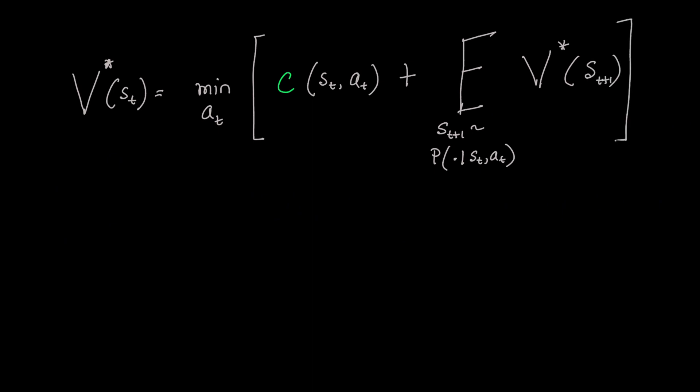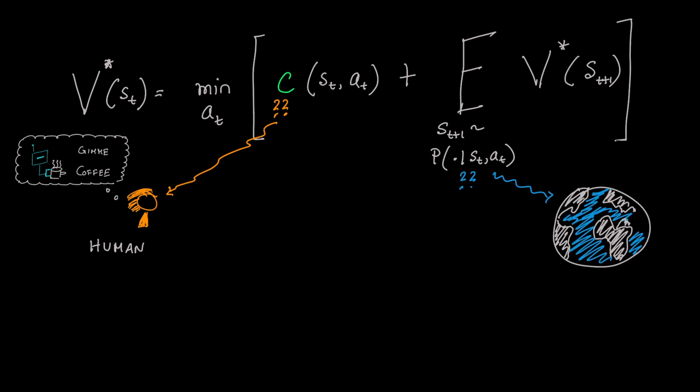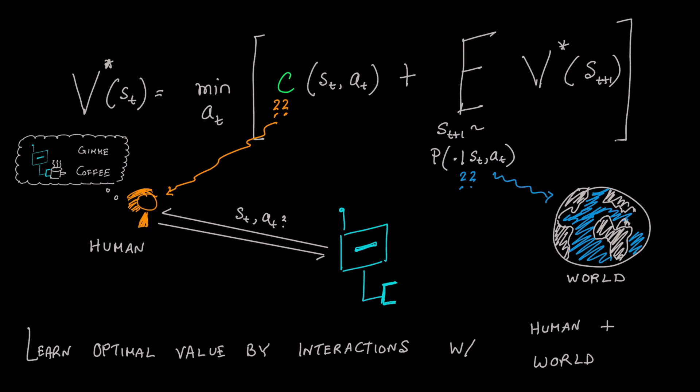The interesting bit is that the robot doesn't know all the pieces in this equation. For instance, how costly an action is depends on the human, the task they want done, and implicit constraints they carry. The transition function, how states evolve, depends on the world the robot lives in. And so, the only way for the robot to find the optimal value is by learning from interactions with both the human and the world.